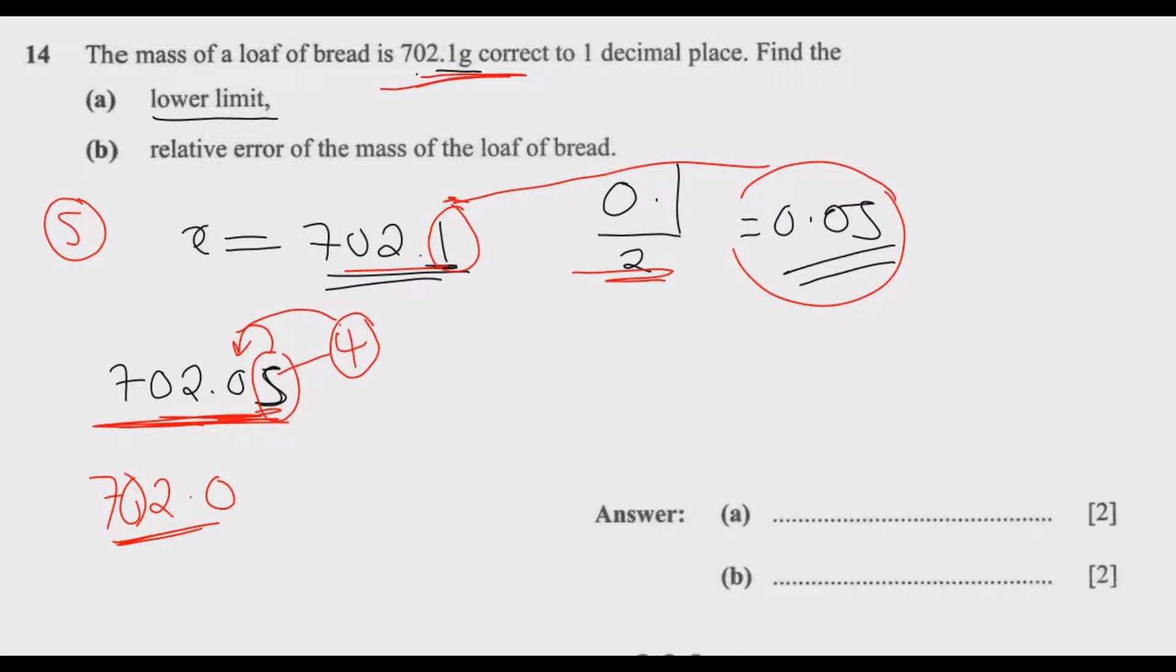If the question was for us to find the upper limit, we add that to this number, then we get a number that is slightly higher. It would be 702.1 plus 0.05, which gives 0.15.